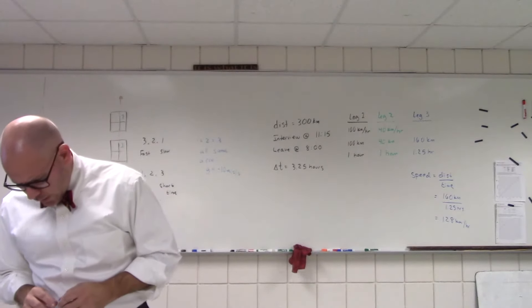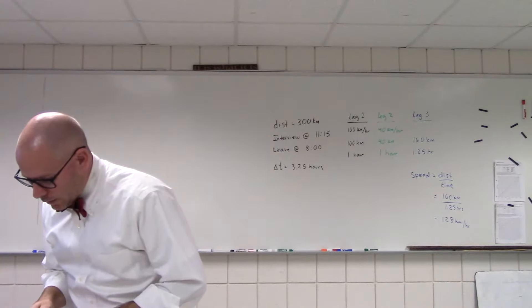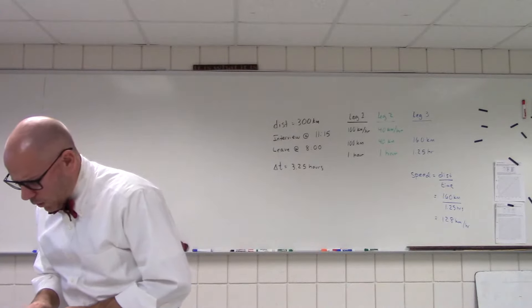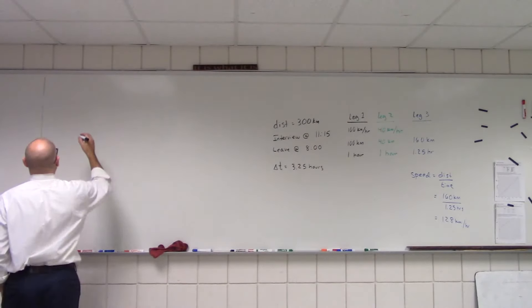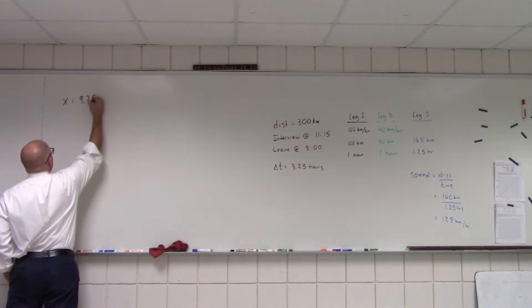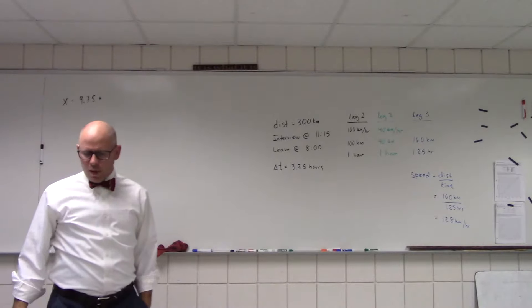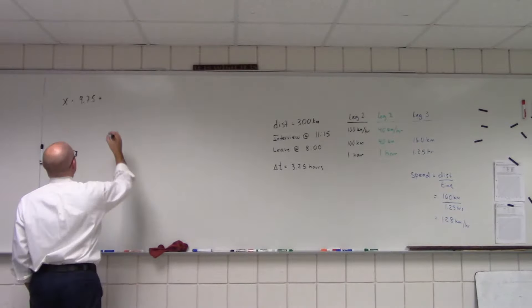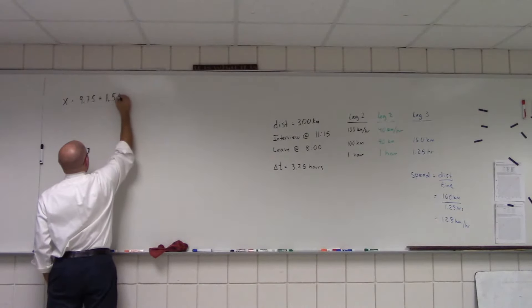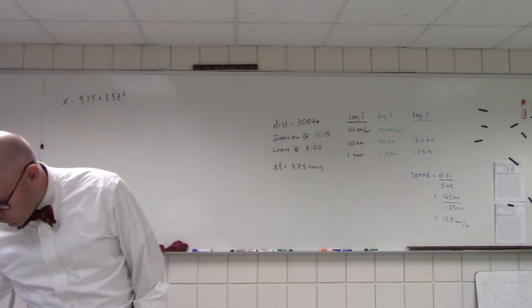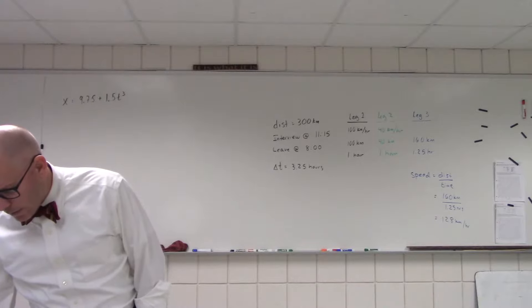All right, next one. Problem 17: x in centimeters is equal to 9.75 plus 1.5 t cubed. Calculate the average velocity during the time interval t equals 2 to t equals 3.